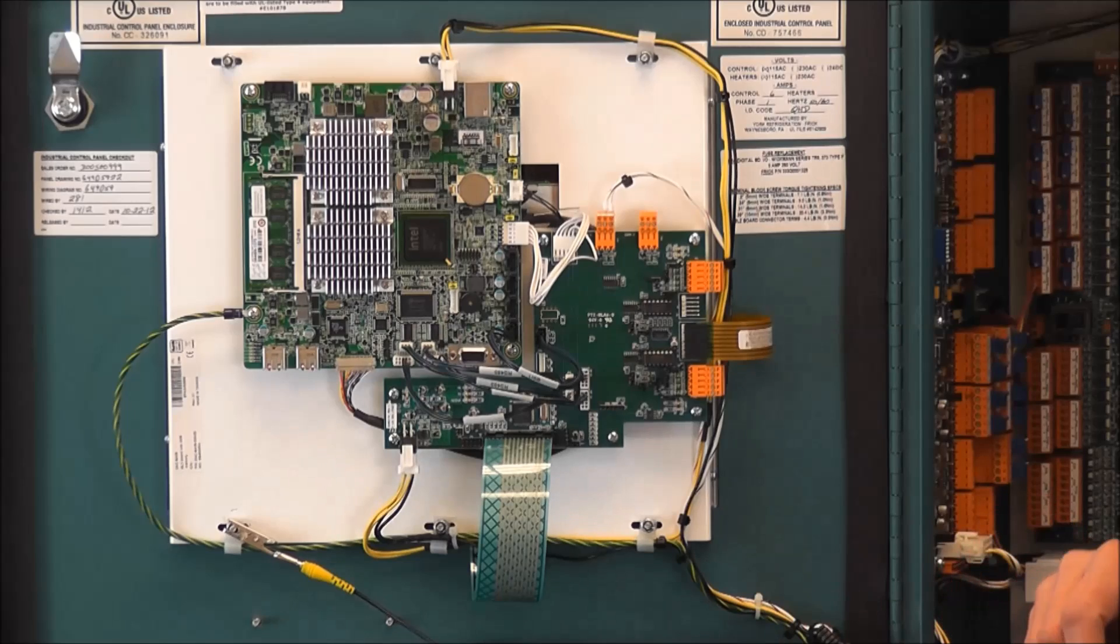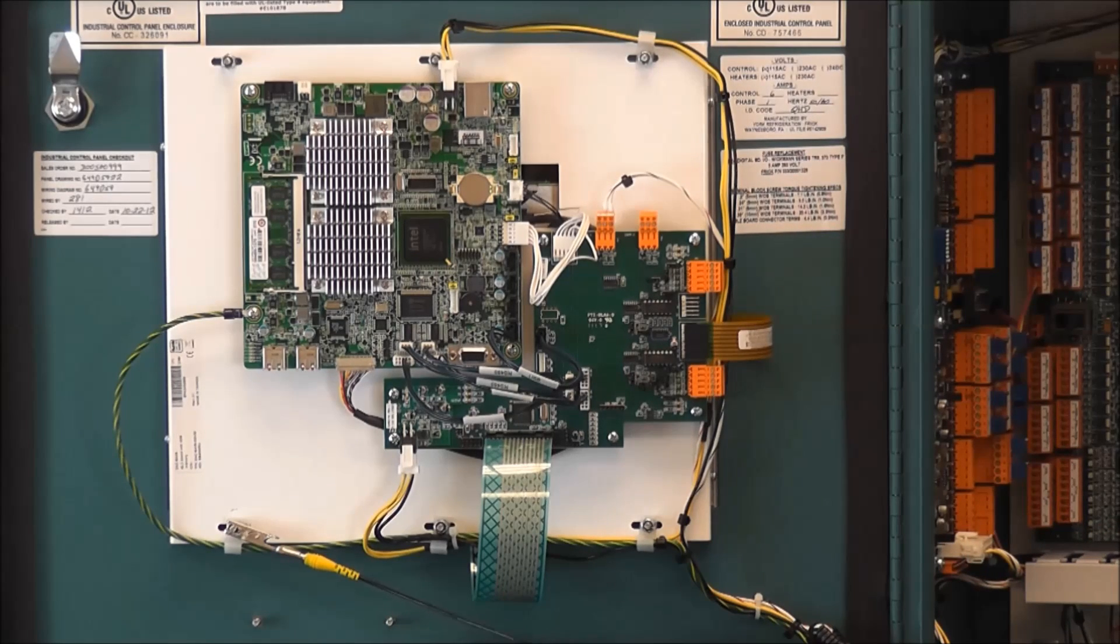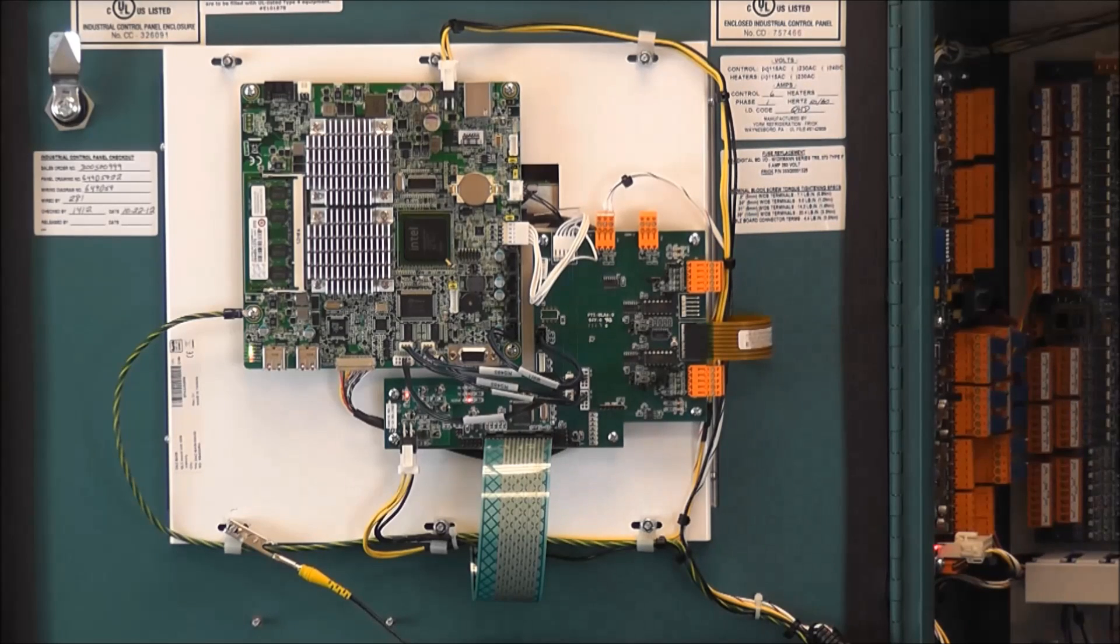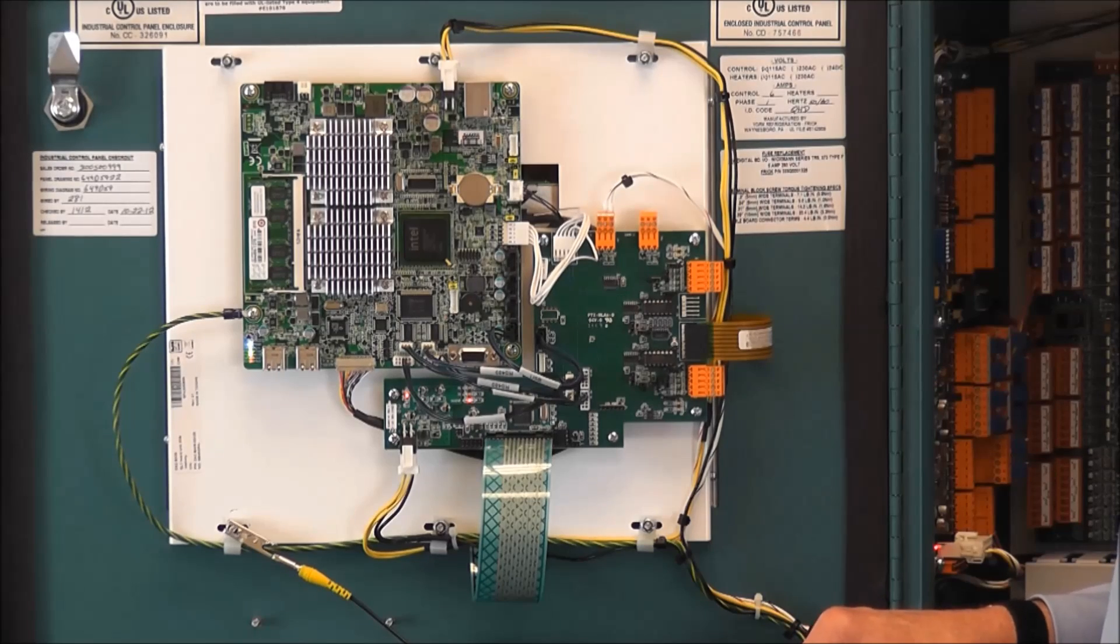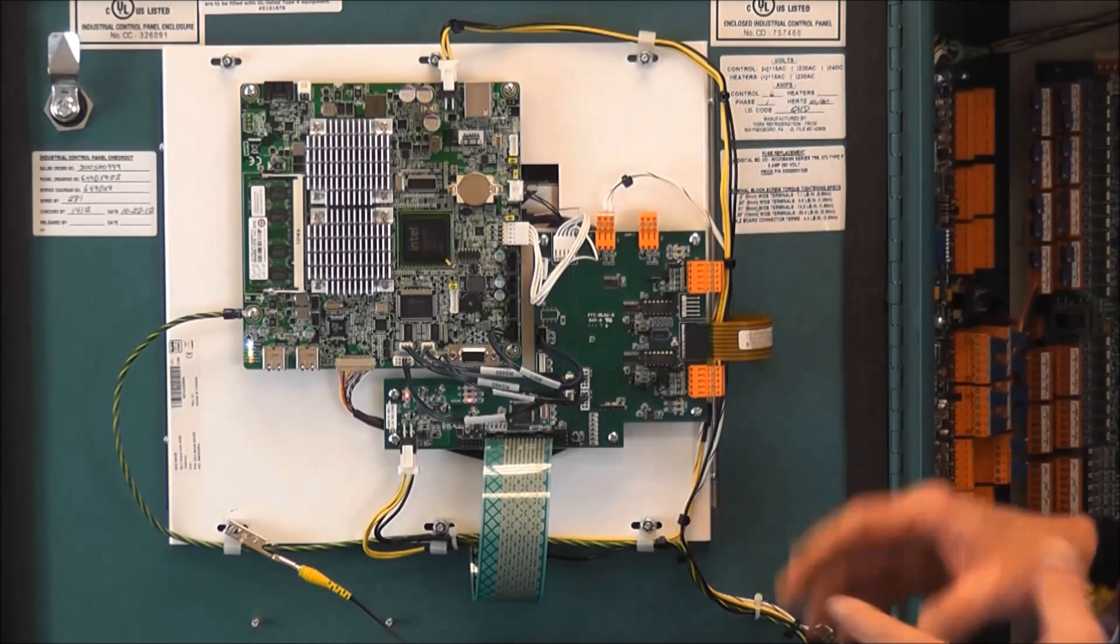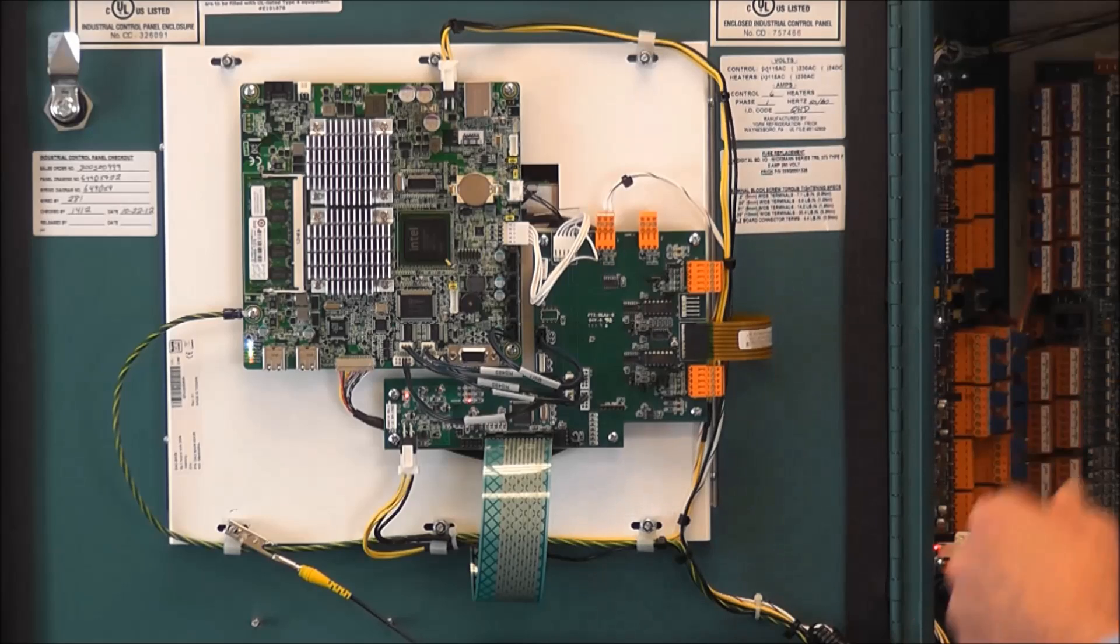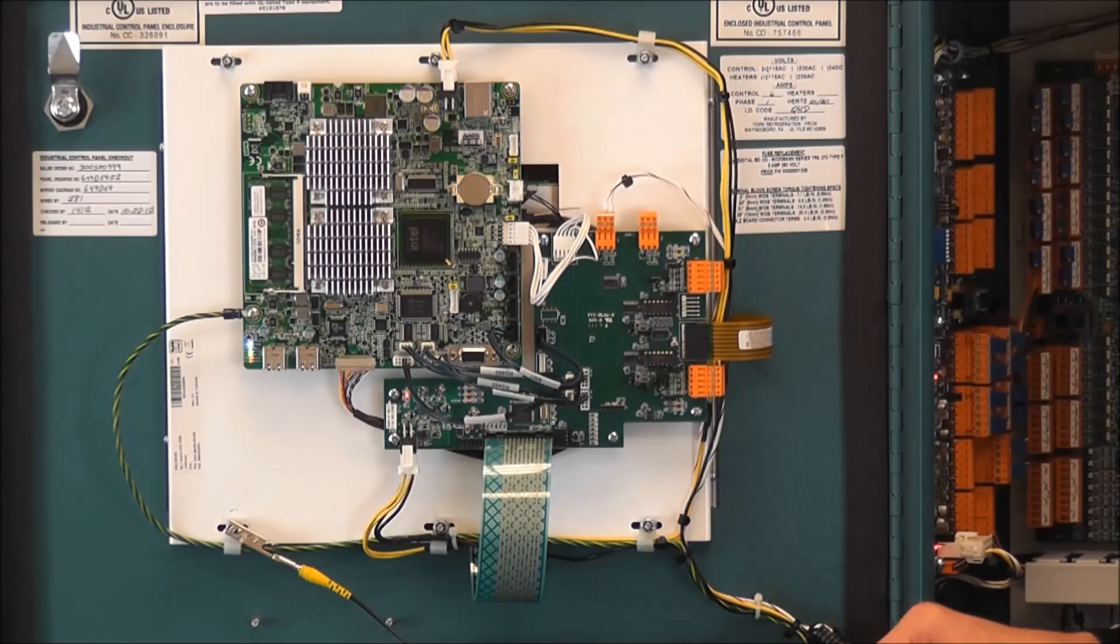Now the next step we want to do is we want to reinstall our USB thumb drive. With the type of processor we have, the USB thumb drive can only be mounted once the processor is fully booted up. Now from the outside, we have a couple of things that we can tell basically that it has booted once the RX-TX lights on the analog and digital board starts to flash.